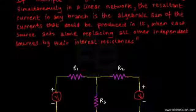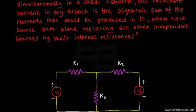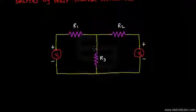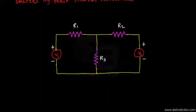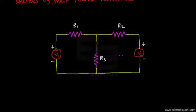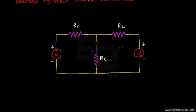In a linear network, the resultant current in any branch is the algebraic sum of the currents produced when each source acts alone. With this example network, we need to find branch currents through R1, R2, and R3. Although simple networks are easy to solve directly, complicated networks with multiple sources become difficult, which is where the superposition theorem simplifies the process.